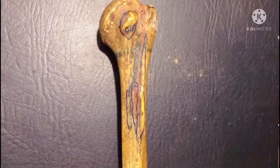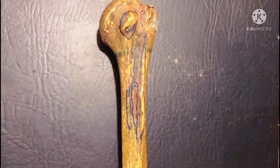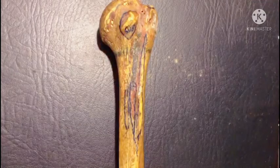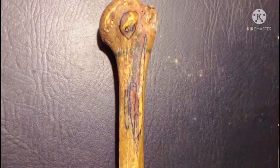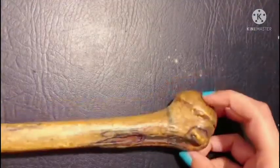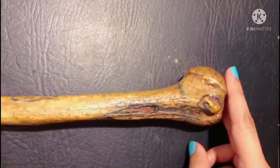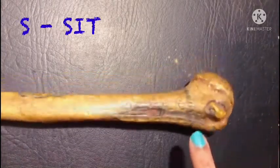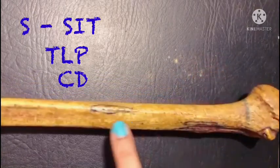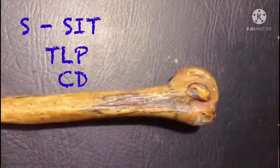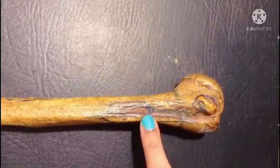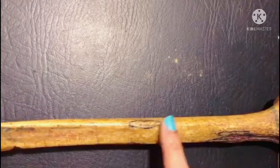Now let's talk about the various origins, insertions, and attachments on the humerus bone. Let's talk about the insertions first, as you are familiar with the muscles of insertion. These are mostly taking part on the upper part of the bone. The mnemonic for insertions is S-SIT-TLP-CD.